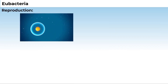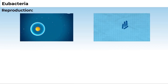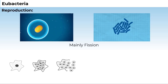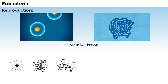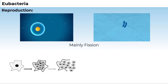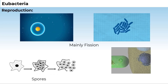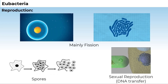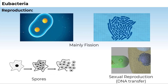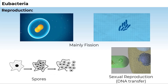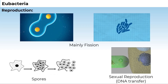Bacteria reproduce mainly by fission. Sometimes, under unfavourable conditions, they produce spores. They also reproduce by a sort of sexual reproduction by adopting a primitive type of DNA transfer from one bacterium to the other.